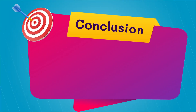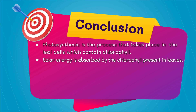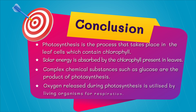From this video, we have learned that photosynthesis is the process that takes place in leaf cells which contain chlorophyll. Solar energy is absorbed by the chlorophyll present in leaves, and complex chemical substances such as glucose are the product of photosynthesis. Oxygen released during photosynthesis is utilized by living organisms for respiration.